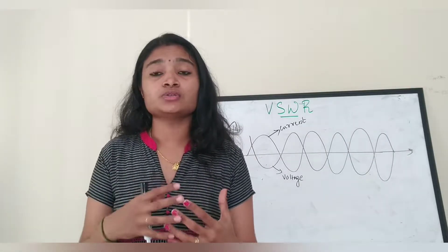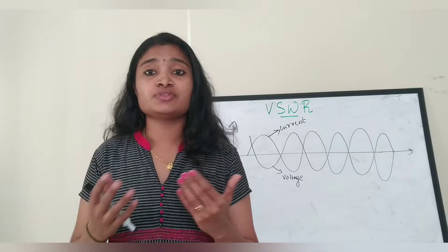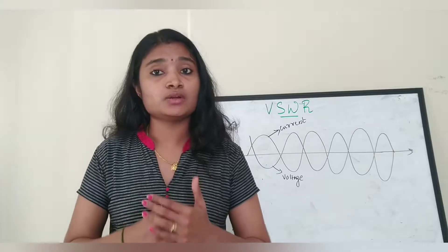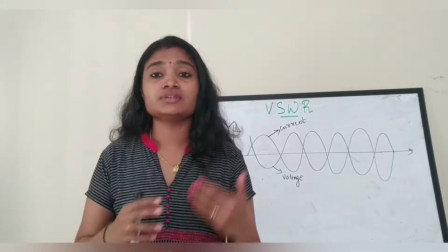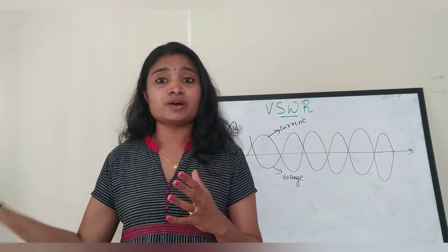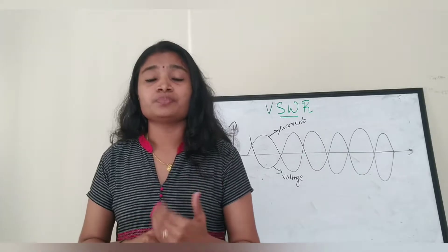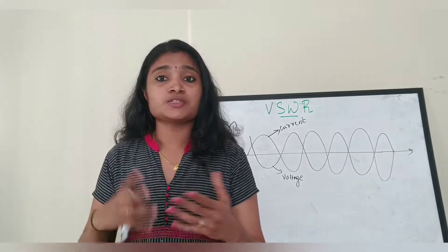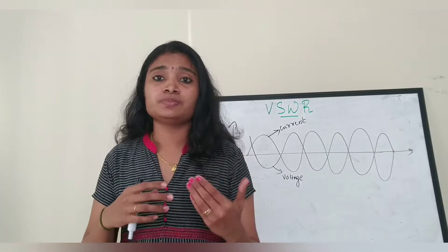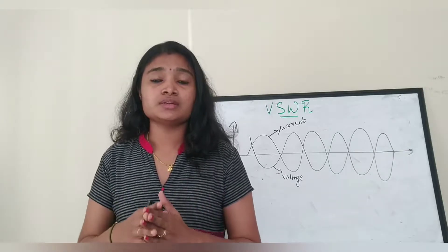When waves are reflected back to the source or feeder, based on the phase difference between the transmitted waves and the waves coming back, these waves are either added or subtracted. The power that is transmitted back from the load side can be expressed as two types: voltage waves and current waves. This power can be expressed as voltage standing waves and current standing waves, because power can be represented as voltage and current.